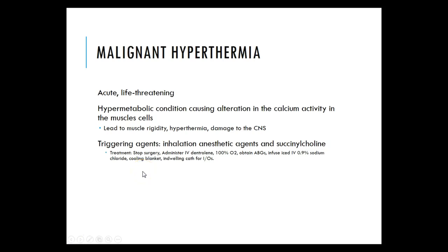Malignant hypothermia is an acute life-threatening, hypermetabolic condition causing alteration in calcium activity in muscle cells, leading to muscle rigidity, hyperthermia, and damage to the central nervous system. Triggering agents are inhalation anesthetic agents and succinylcholine. Treatment includes stopping surgery, administering IV dantrolene, 100% O2, obtaining ABGs, infusing iced IV normal saline, applying cooling blankets, and inserting a Foley catheter for I&Os.